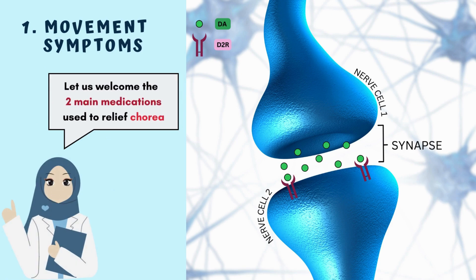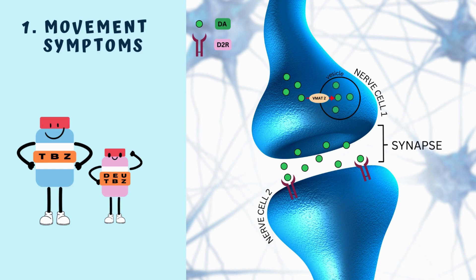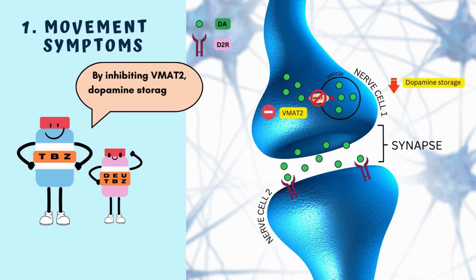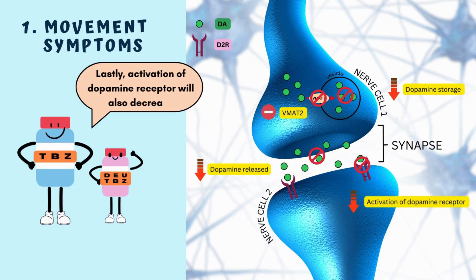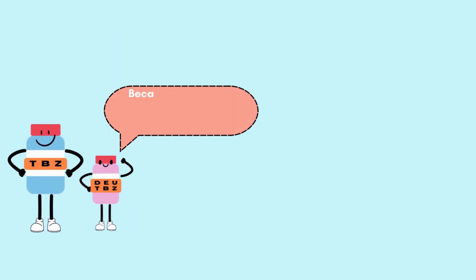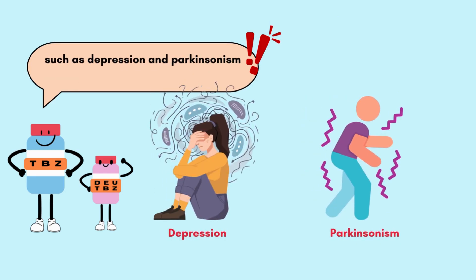The two main medications used to relieve chorea are Tetrabenazine and Deutetrabenazine. They act by inhibiting the vesicular monoamine transporter 2 (VMAT2) in the brain, which stores dopamine inside vesicles. By inhibiting VMAT2, dopamine storage decreases, dopamine release decreases, and activation of dopamine receptors also decreases. Deutetrabenazine is preferred as it acts longer and has minimal side effects. Side effects to watch for include depression and Parkinsonism.